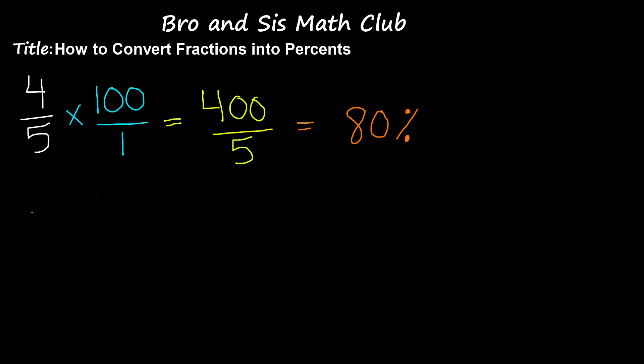Let's say that we have another fraction. We have the fraction 3 over 4. 3 is our numerator and 4 is our denominator. Remember, to convert a fraction into a percent, you have to multiply the fraction by 100. So we're going to be multiplying 3 over 4 by 100 over 1.